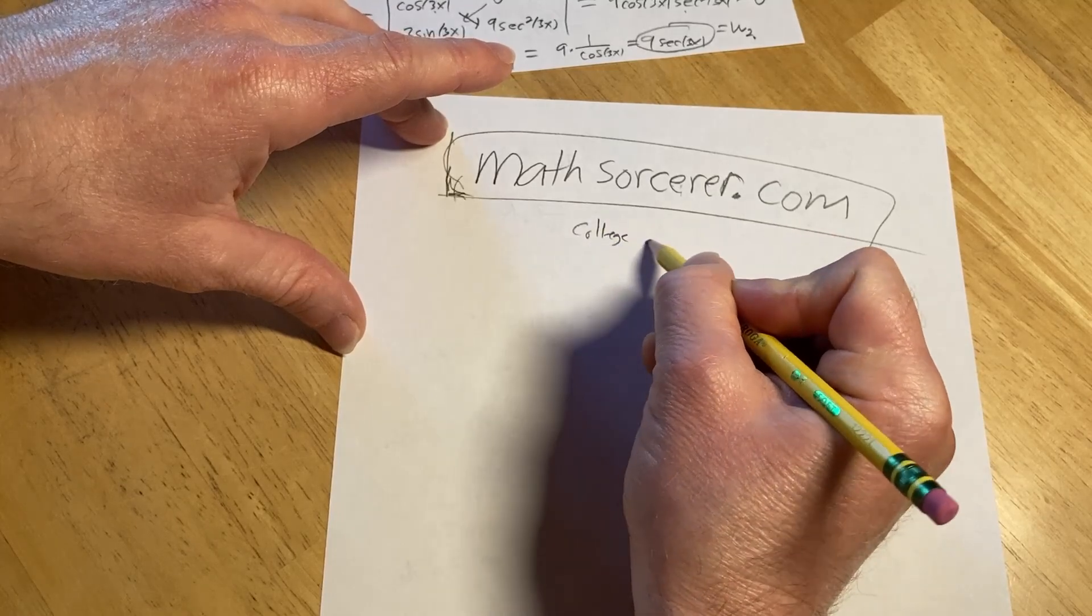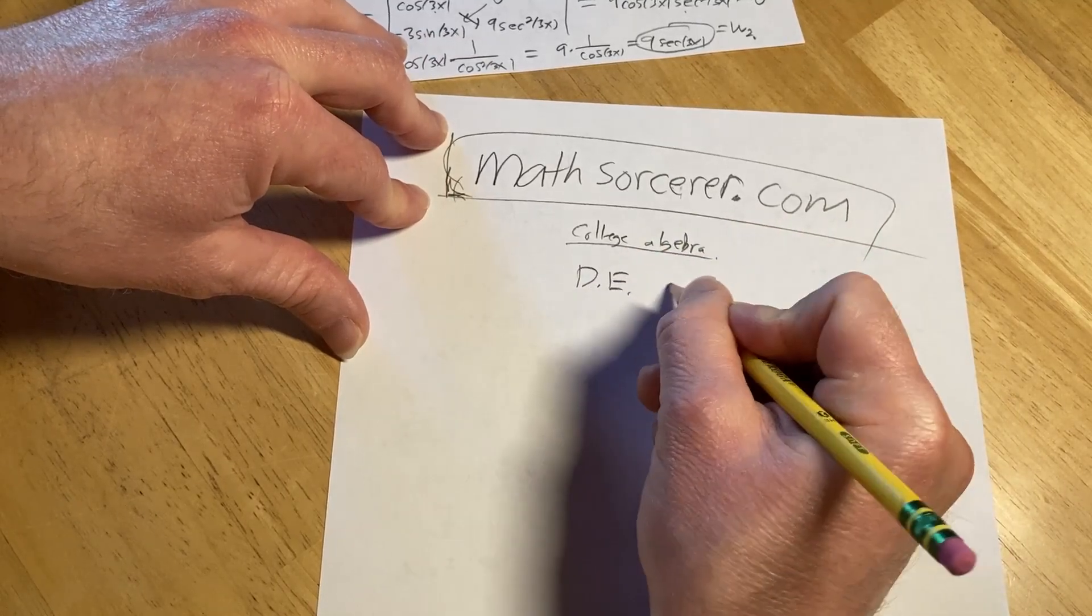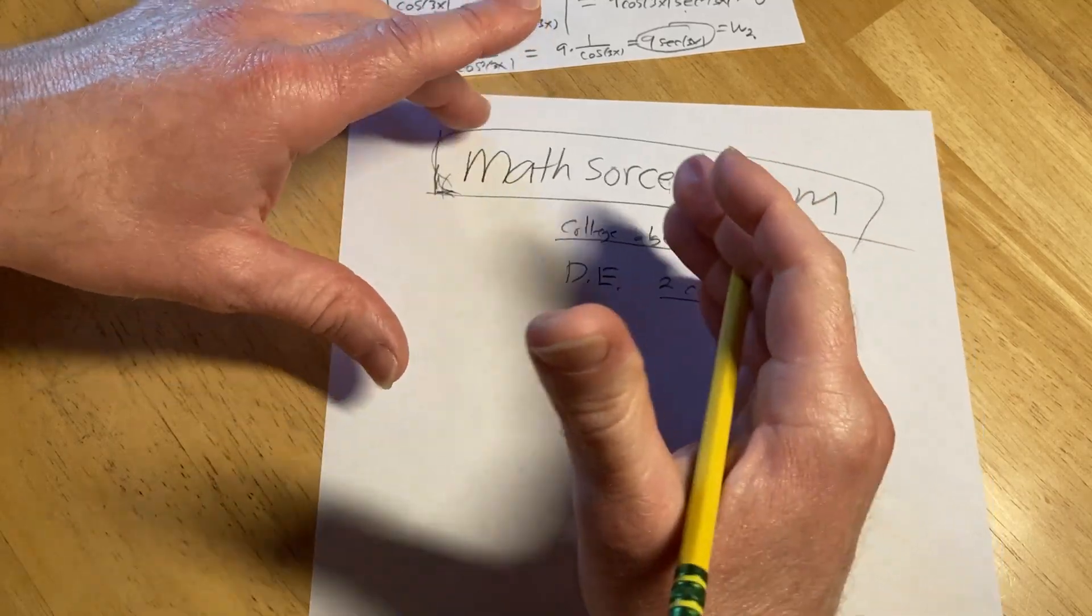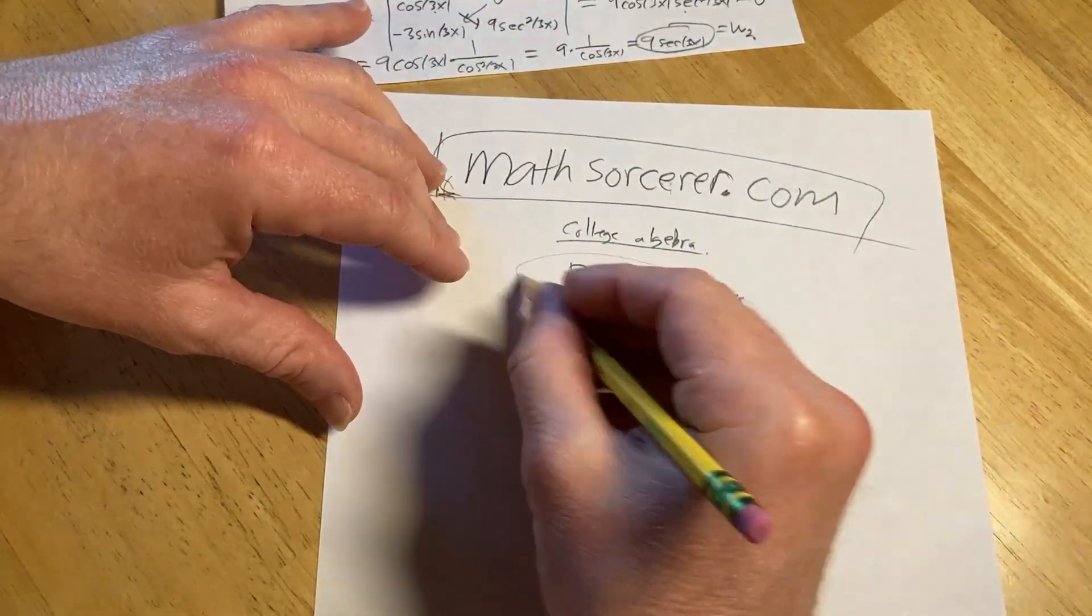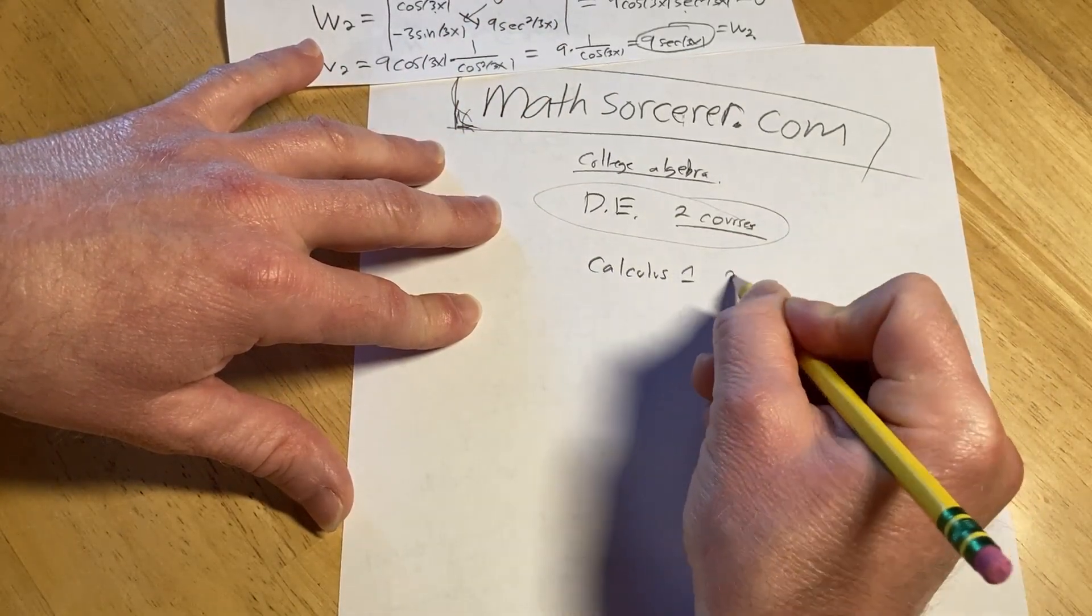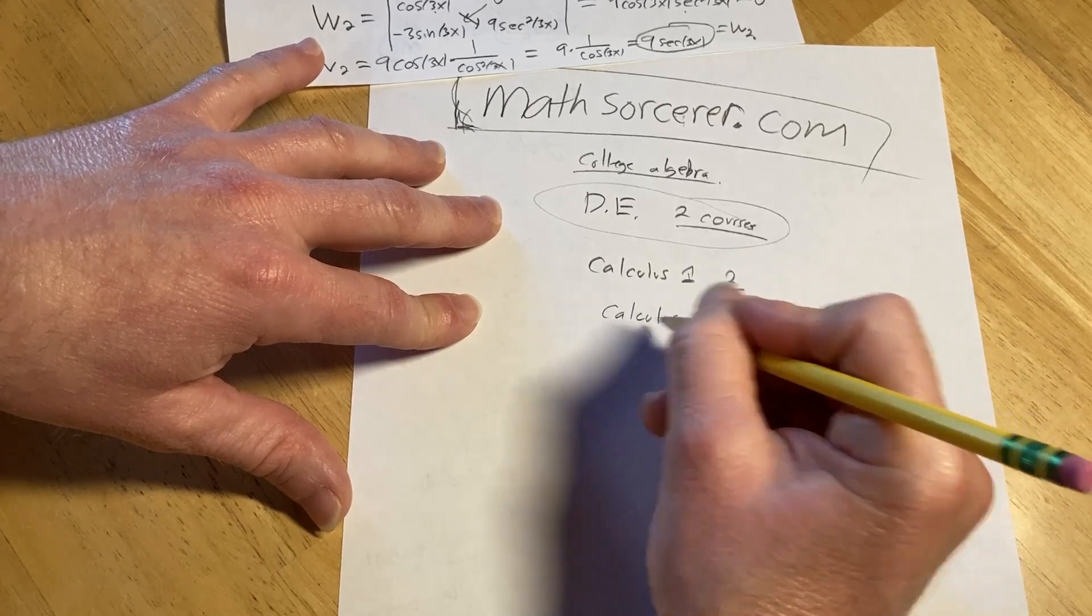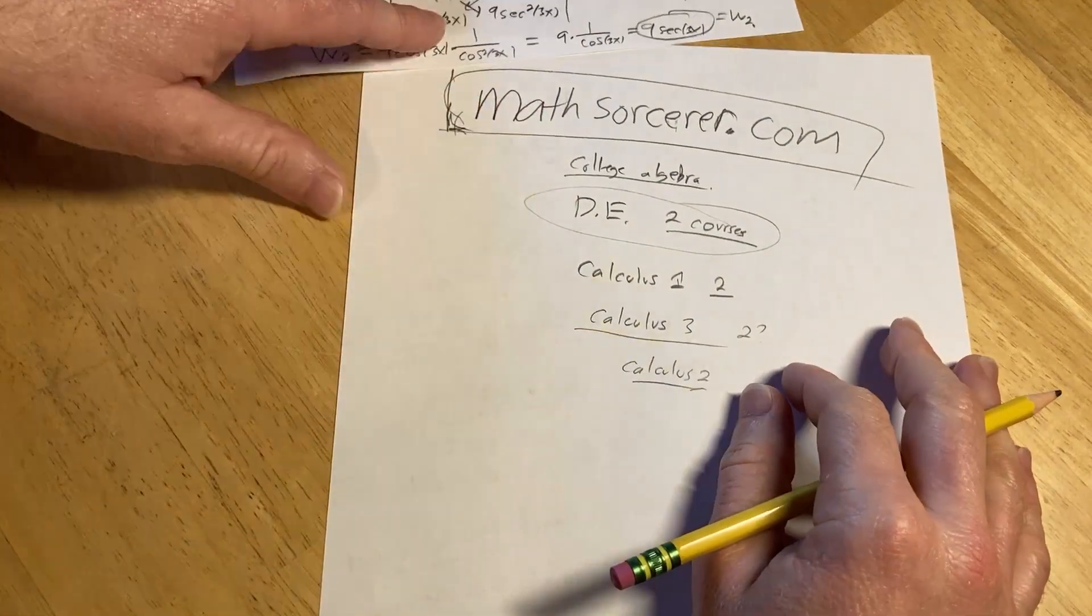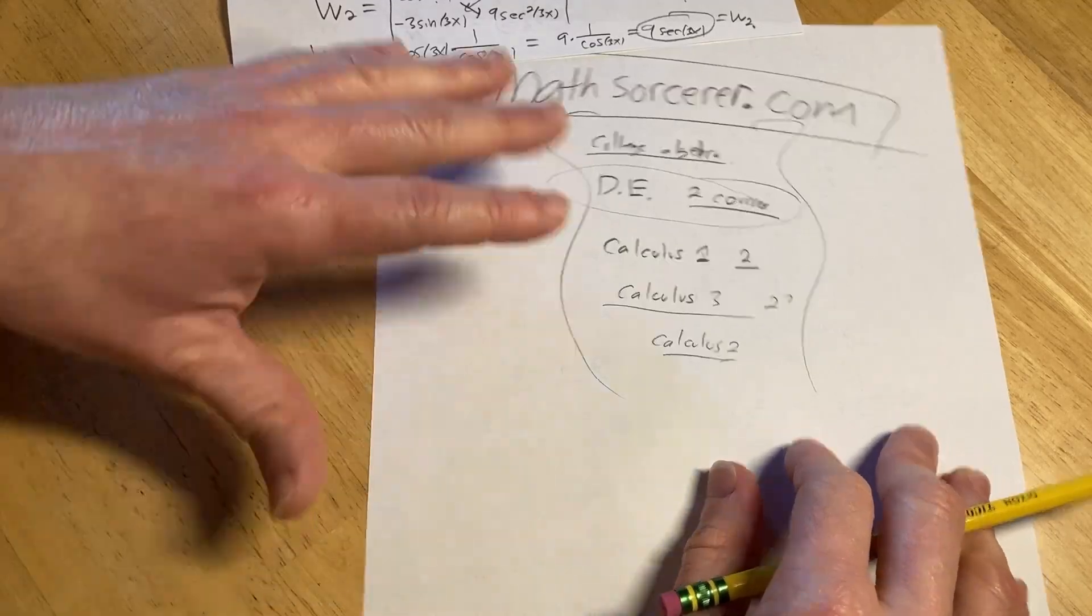As far as what courses I have, I have a college algebra course. That one's pretty good. It's got assignments. I've got two differential equations courses. They're very similar. One has classroom lectures with assignments and a final exam with a final exam review, and the other one has short, little, tiny videos with assignments. I also have a calculus one course. I have two of those, calculus three, I believe I have two of those, and I have one calculus two course, and then I have some other courses as well, like some courses on integration and stuff like that. So a bunch of courses, some on proof writing, et cetera.